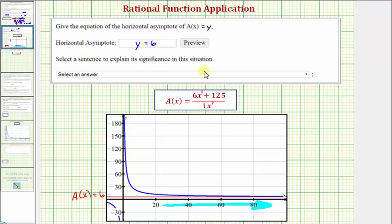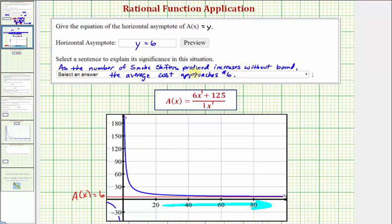Now let's talk about what this means. This means that as the number of smoke shifters produced increases without bound or approaches infinity, the average cost approaches 6 dollars. As the number of smoke shifters produced increases without bound or approaches infinity, the average cost approaches 6 dollars. Again, I think our homework system may say approaches infinity, but increasing without bound means the same thing. I hope you found this helpful.